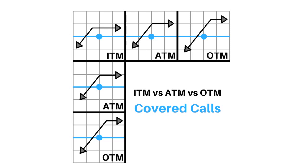To sum things up: an in-the-money covered call has the highest probability of profit, however the smallest profit in size. An out-of-the-money covered call has the lowest probability of profit, but the biggest profit when it comes to size. An at-the-money covered call is right in between. So which of these is best really depends on your risk appetite. If you sell more than one call option, you could also combine an in-the-money and an out-of-the-money covered call to form a hybrid of these two.